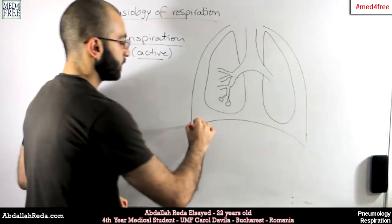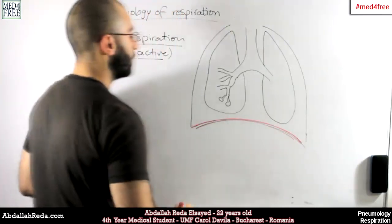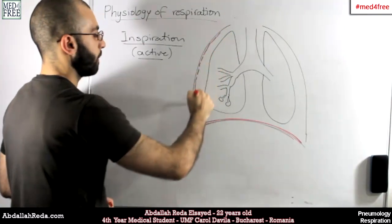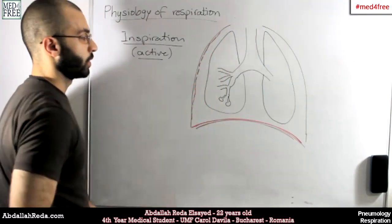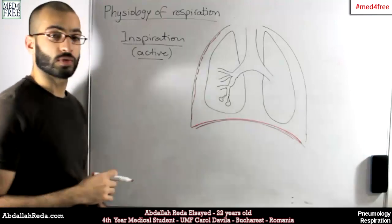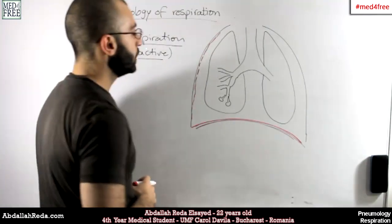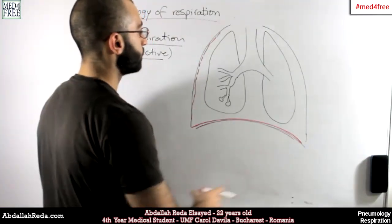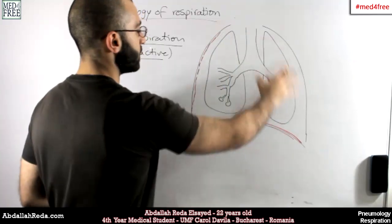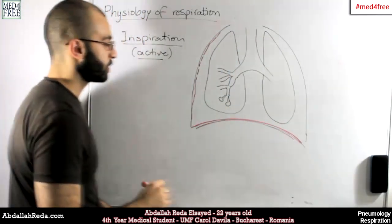So we have the active muscles of respiration, which are the diaphragm and the internal intercostal muscles — not the external ones. The external ones are responsible for expiration, as we're going to see later.